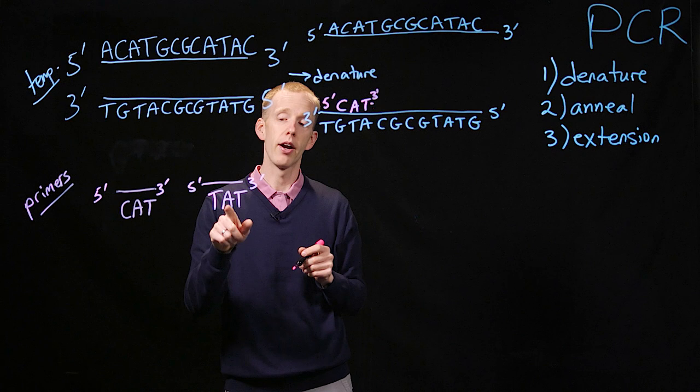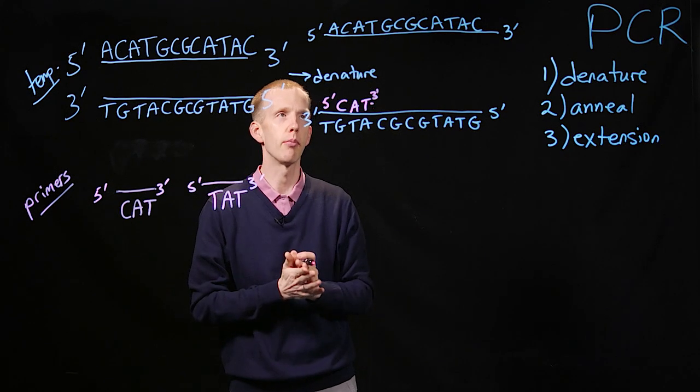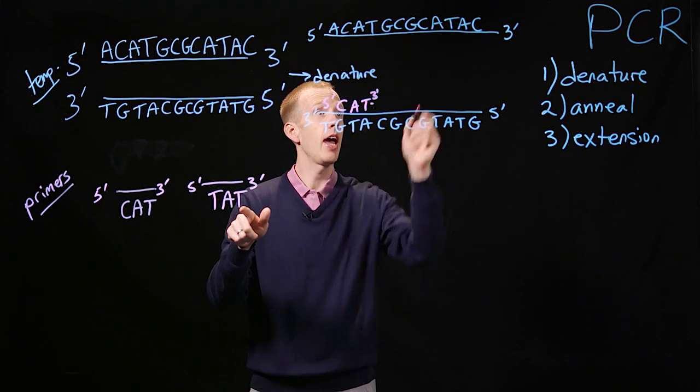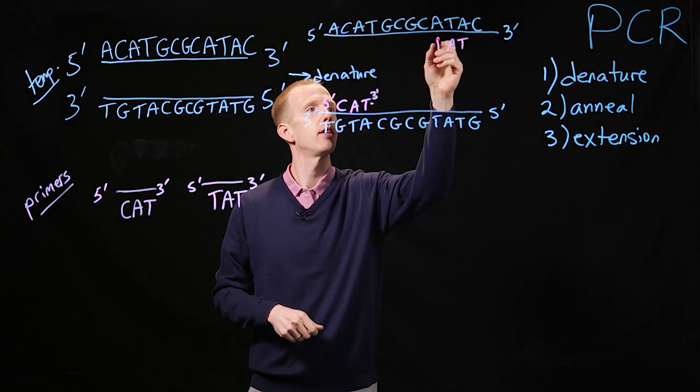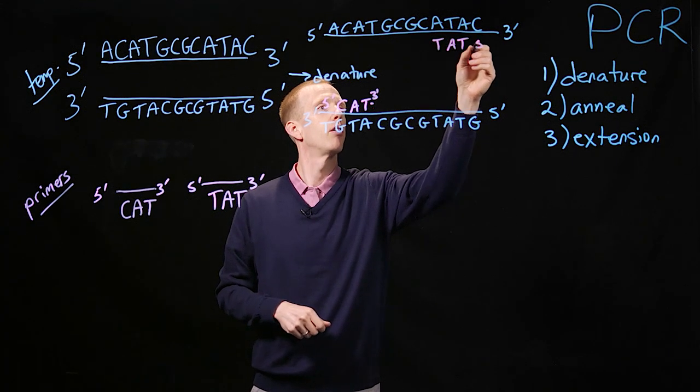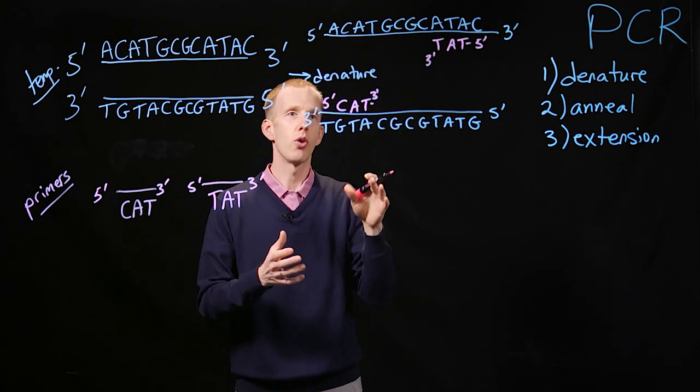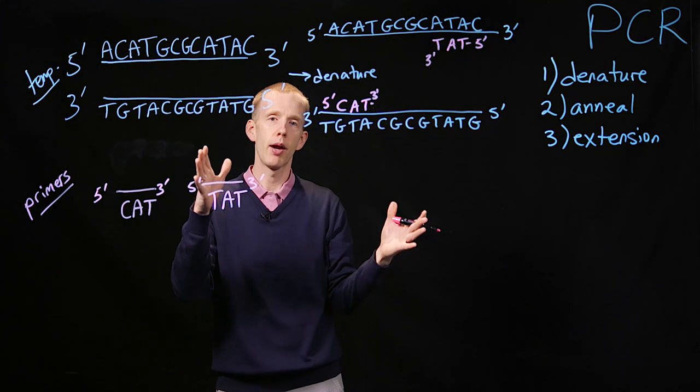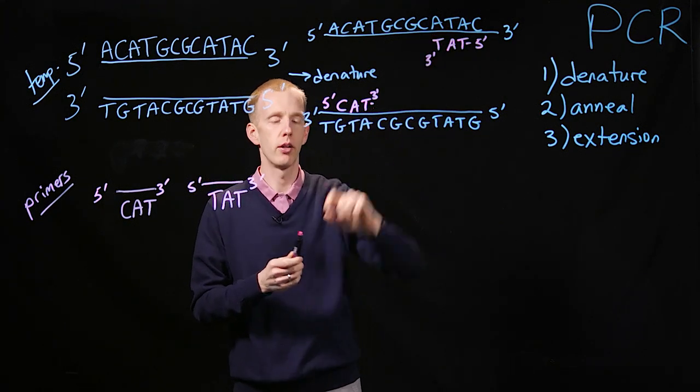And the same is true for this primer. Which strand and where does TAT hybridize up here to the denatured DNA molecules? Well, we need to look for the complement ATA, which is right here. So we have TAT from 5' to 3'. So after the denaturation step, we melt the DNA. Anneal, we add the primers and let the solution cool back down to form these small little double-stranded molecules.